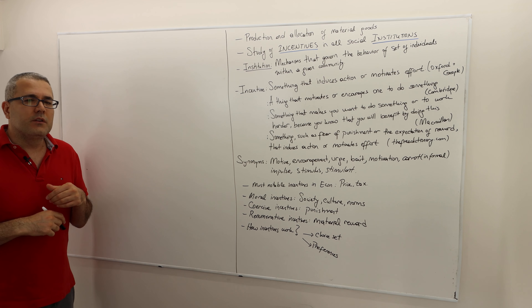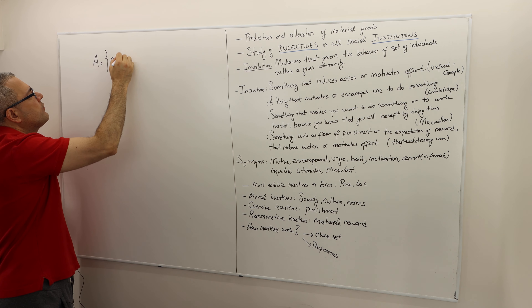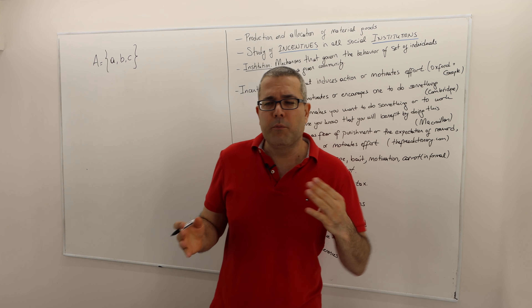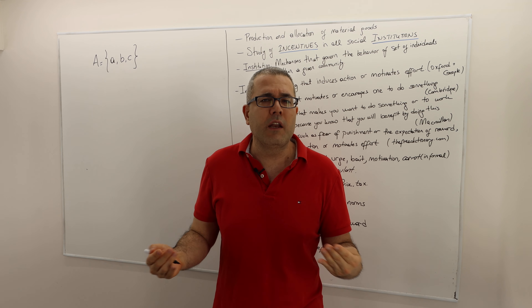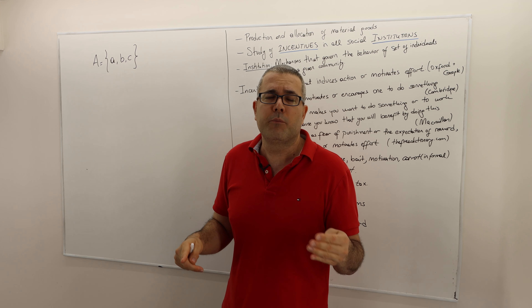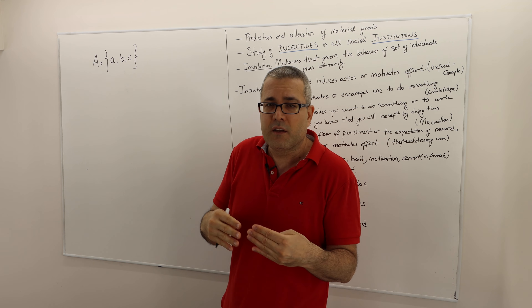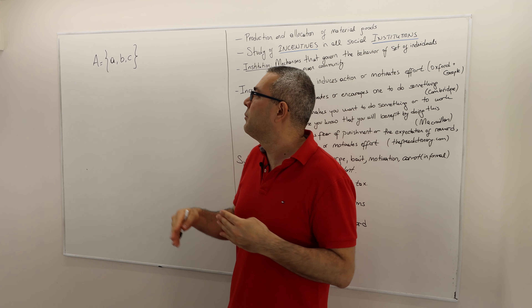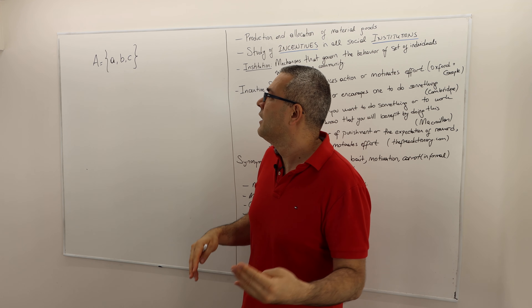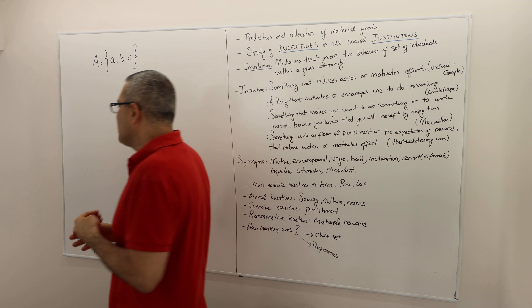Let's consider a very simple choice problem. Suppose a decision maker is choosing between three alternatives: a, b, and c. My example involves internet plans — Fido offering 150 megabytes per second download speed at $75, Rogers offering 500 megabytes per second at $105, and a one gigabyte option that's $20 more expensive. The question is which alternative to pick.